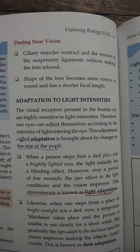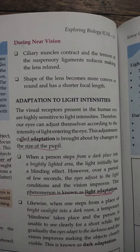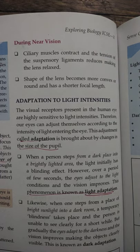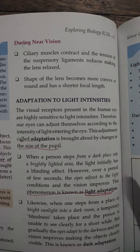When you exit a movie hall, it is difficult at first — there is a blinding effect. Our eyes take time to adjust to the light conditions. That is known as light adaptation.